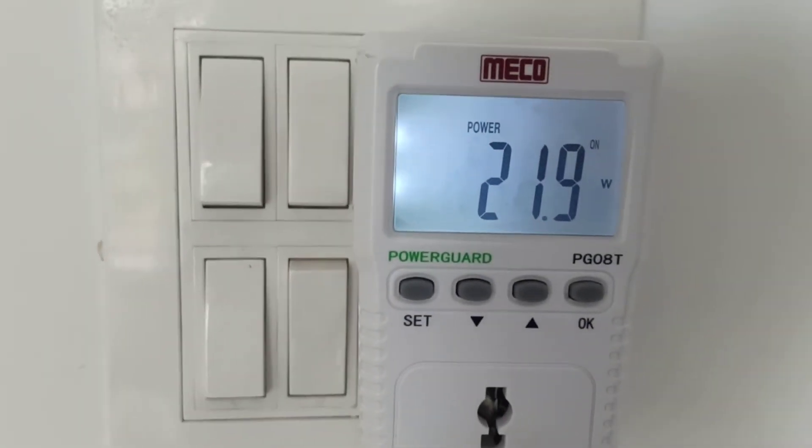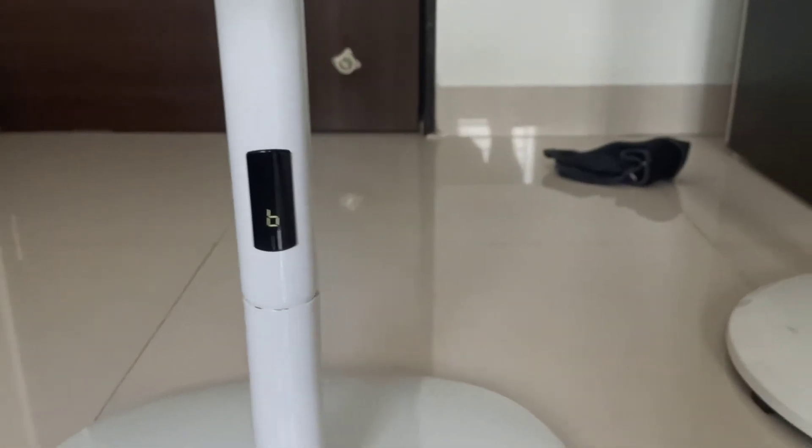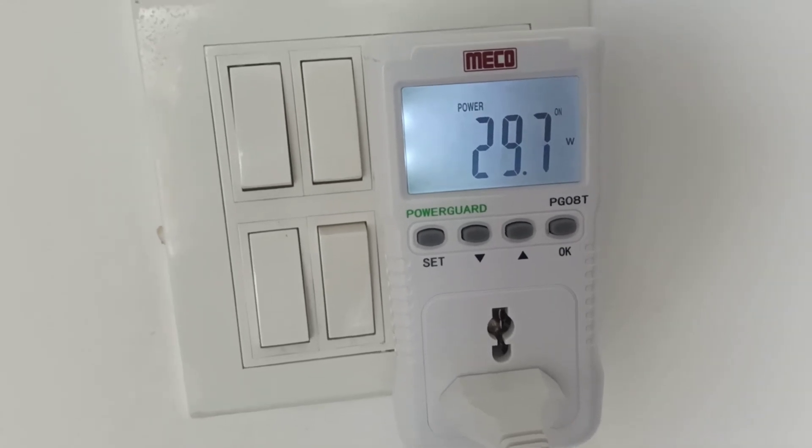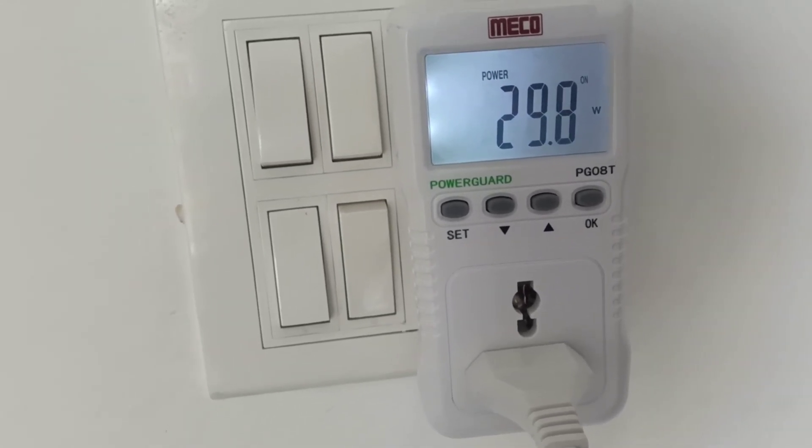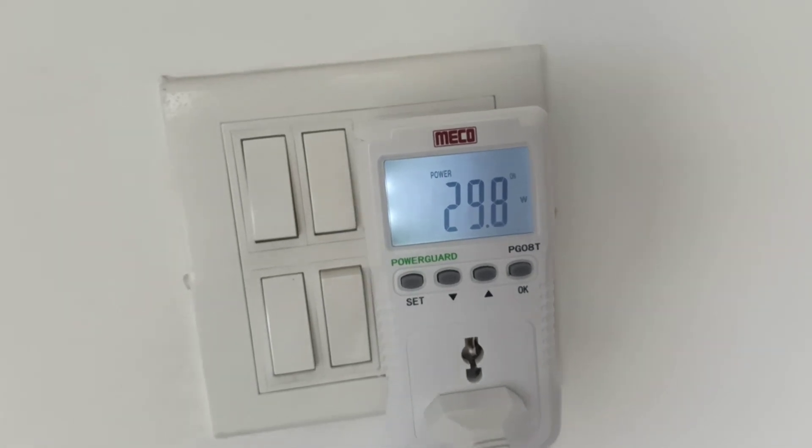At speed 5, power has increased to 22 watts. Speed 6 is the maximum speed, where the power consumption is less than 30 watts, which matches the claim from Atomburg.